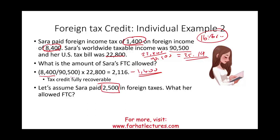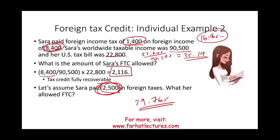Let's assume Sarah paid $2,500 in foreign taxes instead. What will be her allowed foreign tax credit? $2,500 divided by $8,400 means her foreign tax rate was approximately 29.76% — she paid too much. Using the same formula, the US-attributed tax is still $2,116. She paid $2,500, but her credit is only $2,116. The difference — $2,500 minus $2,116, which is $384 — is unused, and she can carry it back one year or forward 10 years.